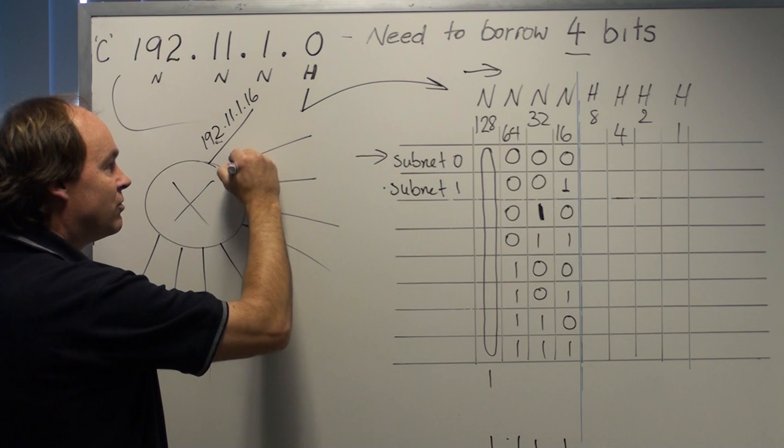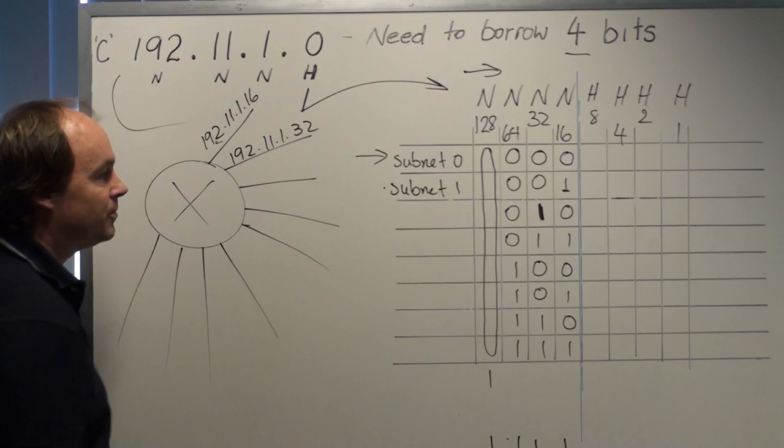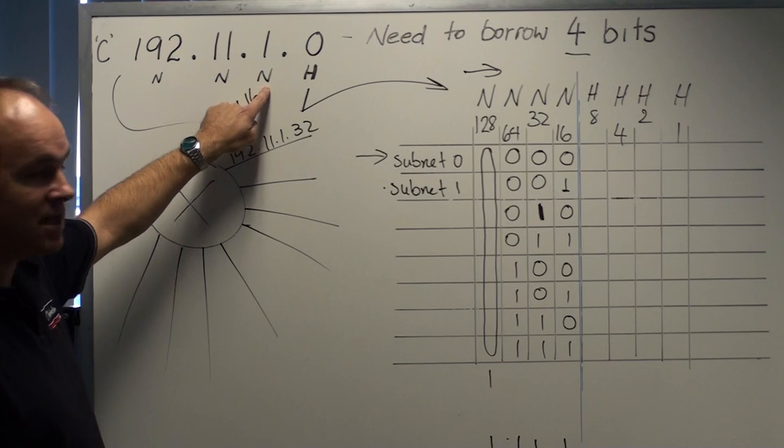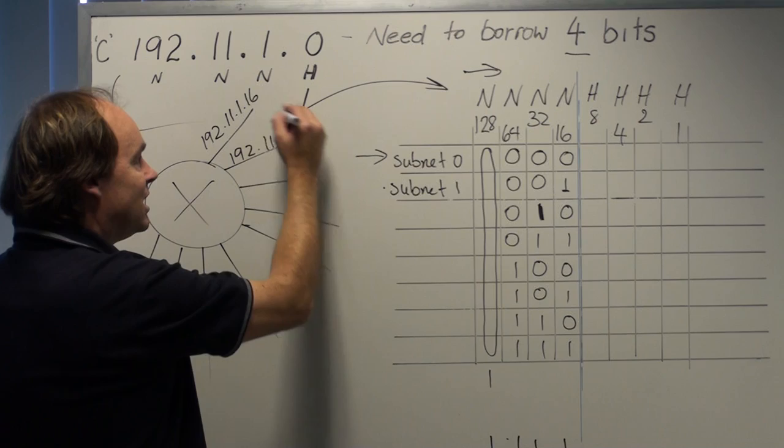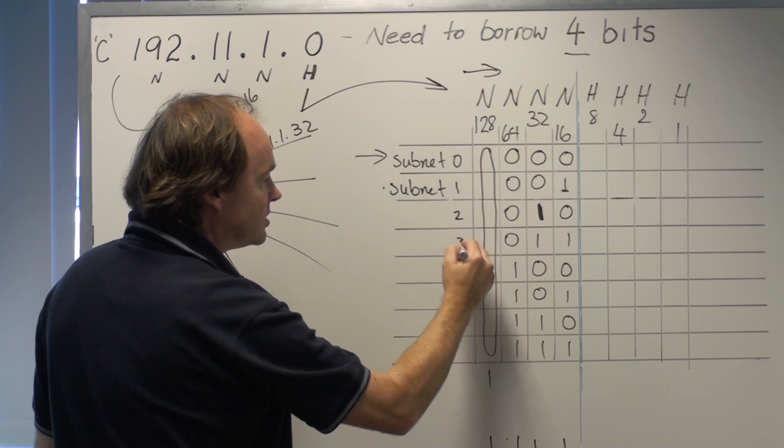So that'll be our next road, 192.11.1.32. Same three numbers, that never changes, because remember, this structure is stuck, it's fixed. We will always keep that, but where it changes is the last octet, indicated here. And so on, so that's two, this is subnet three, subnet four, subnet five, subnet six, subnet seven.